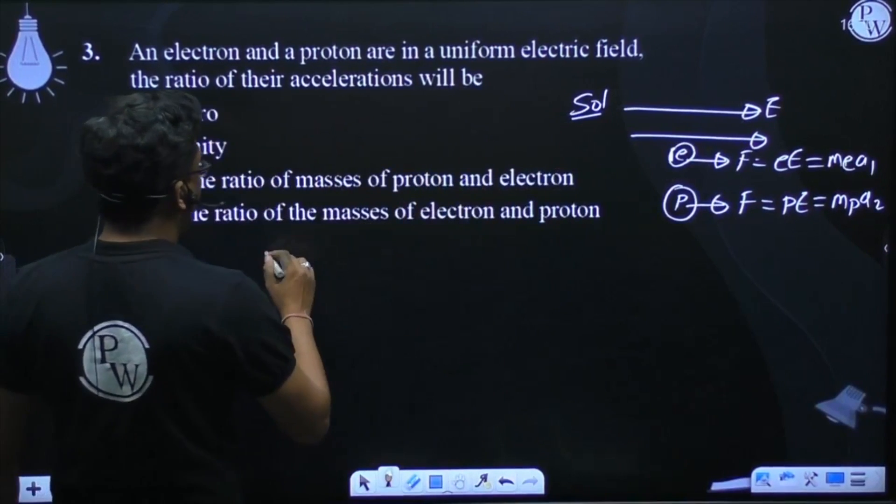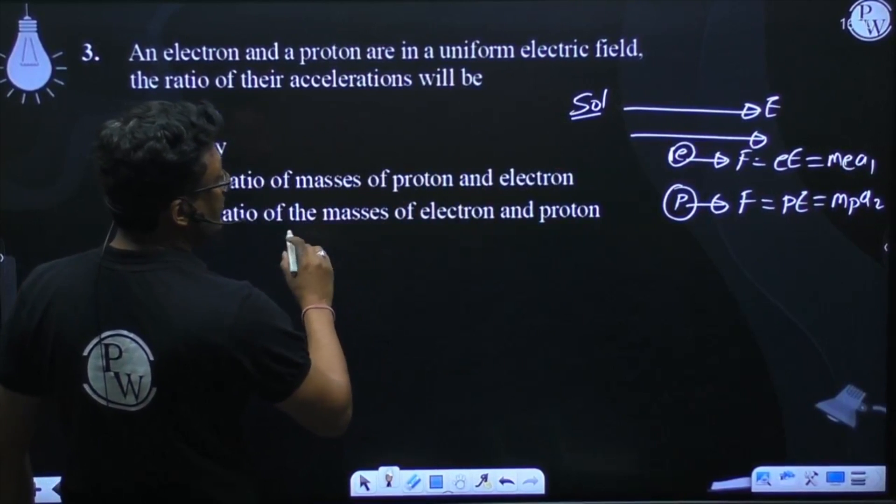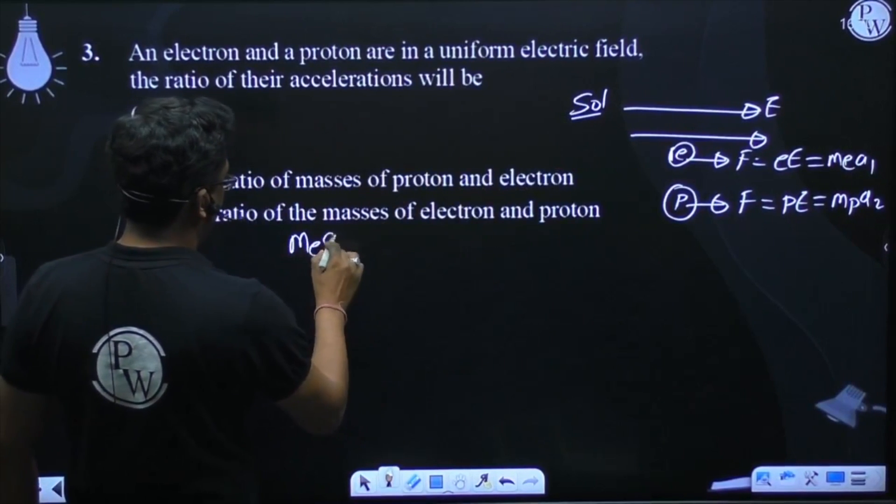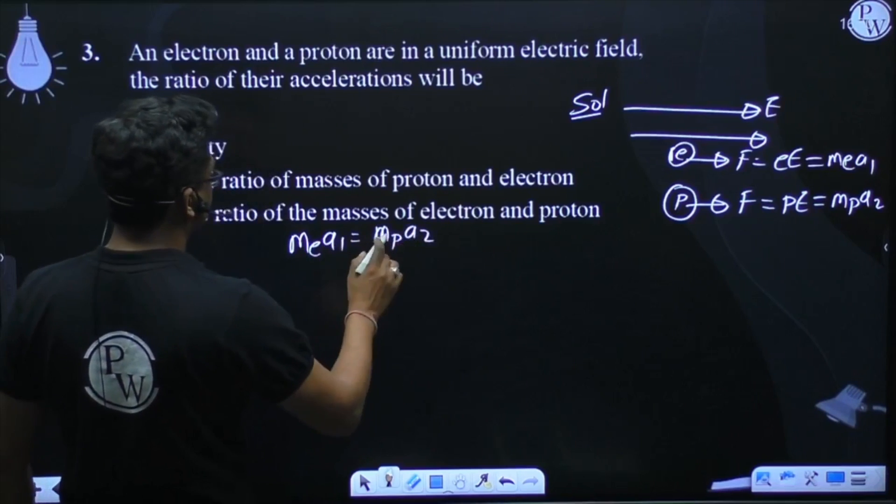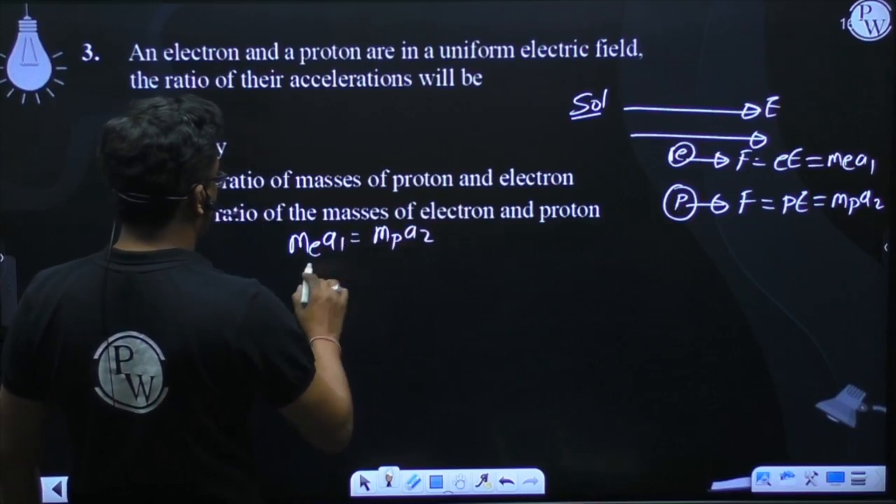So what do we do here? If you know that Me times a1 will equal Mp times a2, considering the mass of proton and electron,